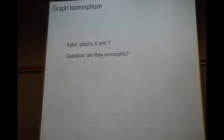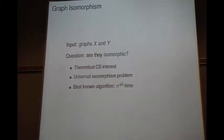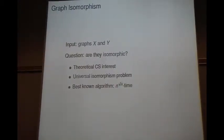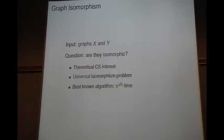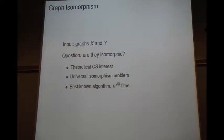Let me start by talking about probably the most important problem in the area, which is graph isomorphism. We're given two graphs and we want to know whether they're isomorphic — meaning is there a bijection of the vertices that preserves the edges. This is the most important isomorphism problem because it is, in a very specific sense, a universal isomorphism problem: if we can solve graph isomorphism in polynomial time, then we can solve isomorphism of explicit combinatorial structures in polynomial time.